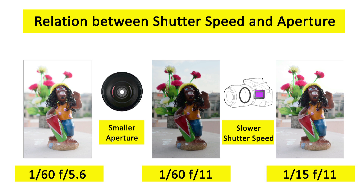Once you slow down the shutter speed to 1/15th of a second and keep the same aperture of f/11, you will see you get more background in focus. That means you will have a greater depth of field and the same exposure as the first image.